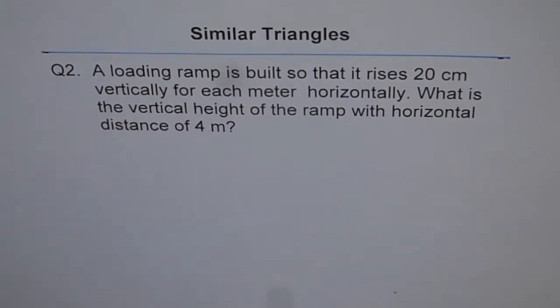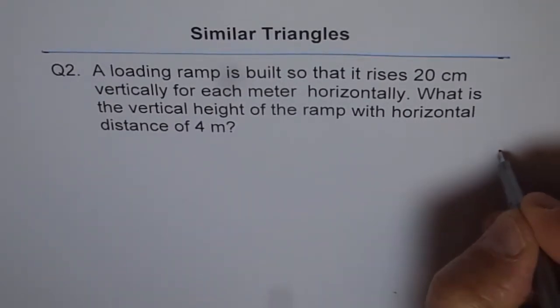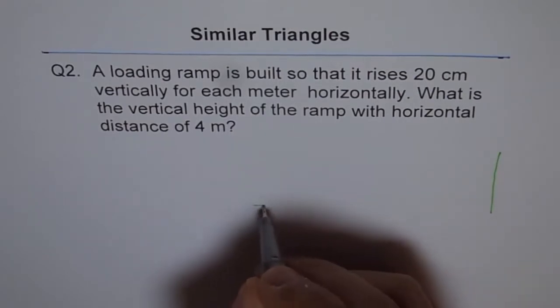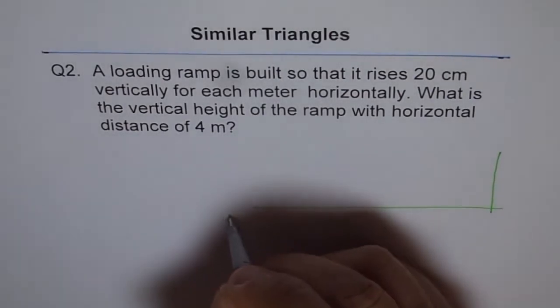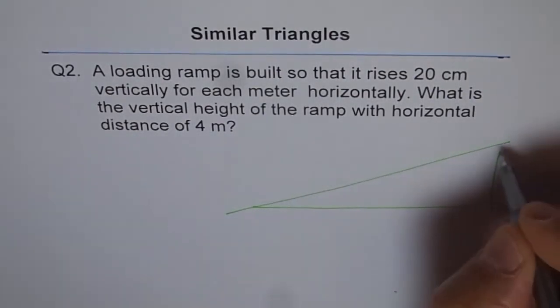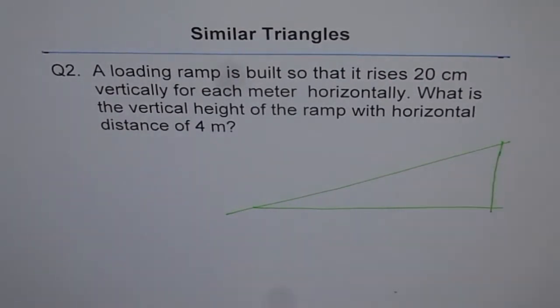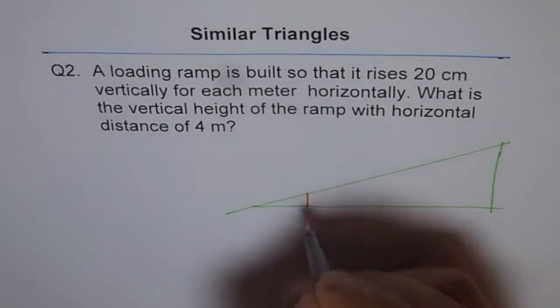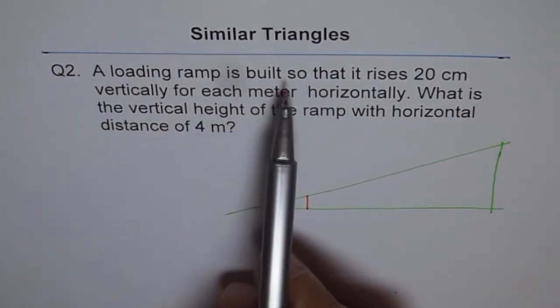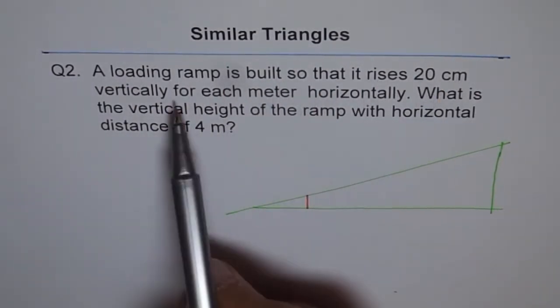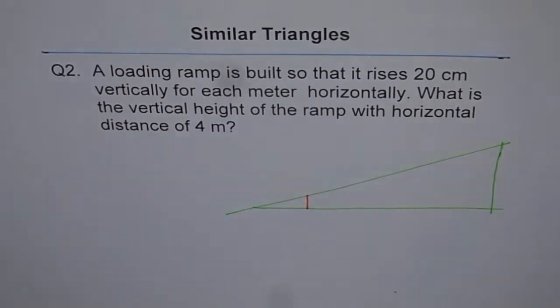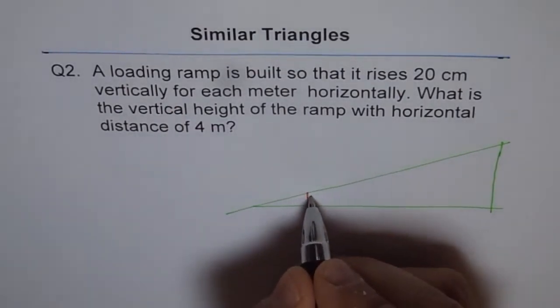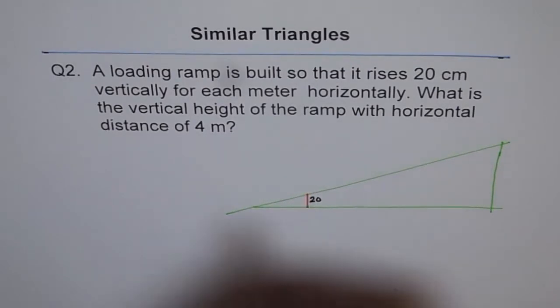We will use the properties of similar triangles to solve this question. Let's say that this is our ramp. Let me draw a long ramp. So that's our ramp. Now in this ramp, the loading ramp rises 20 cm vertically. This is 20 cm.